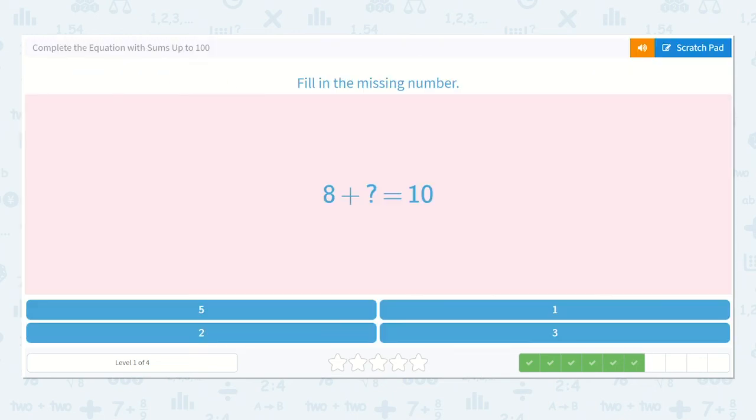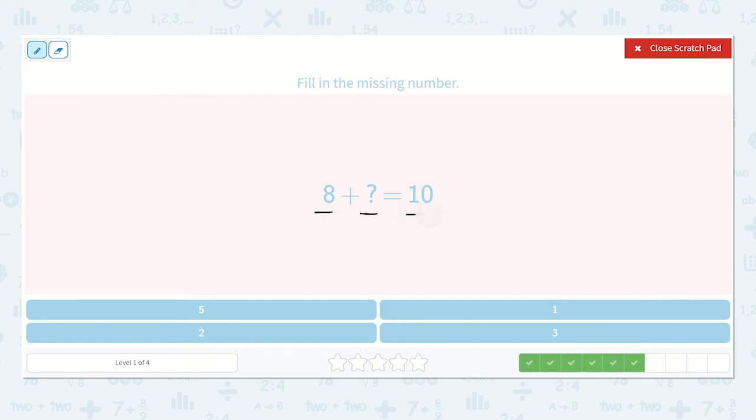Alright, let's fill in the missing number. 8 plus a number is equal to 10. So let's count on. 8, 9, 10. Ah, it is 2. 8 plus 2 is equal to 10.